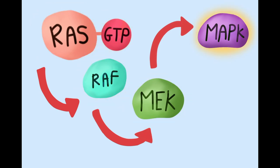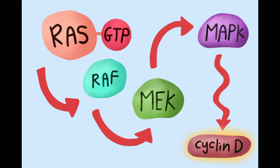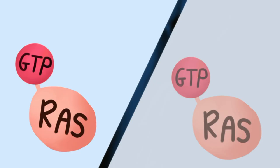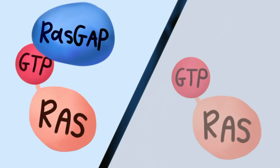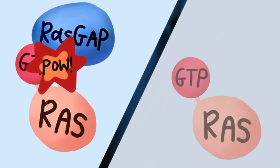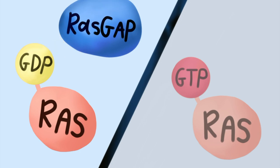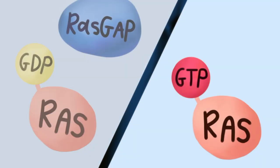One product of this pathway is cyclin D, a protein stimulating cell division. Normally, RAS is stopped when RAS GAP hydrolyzes GTP to GDP, inactivating RAS.